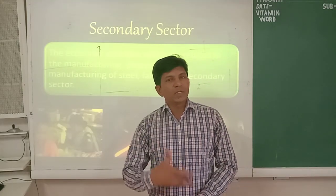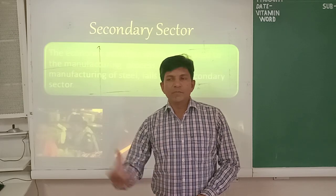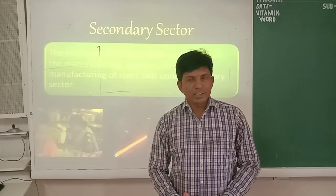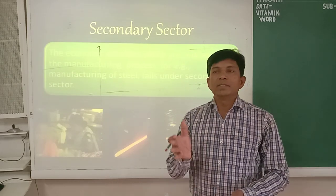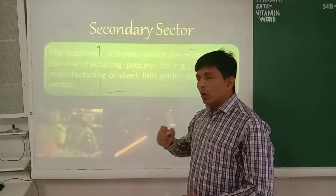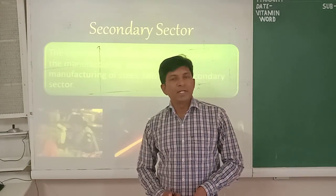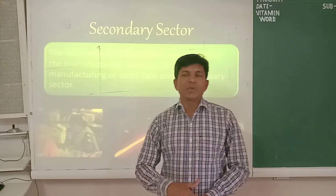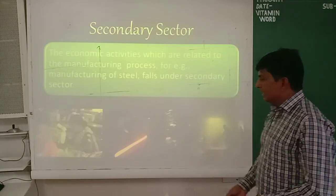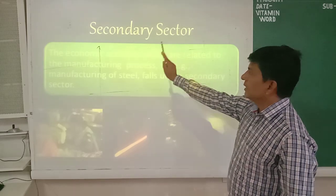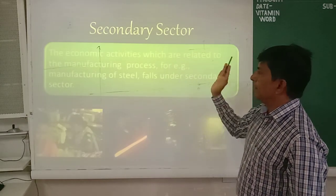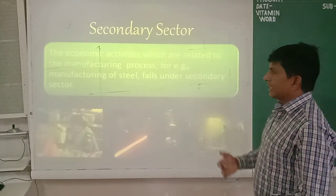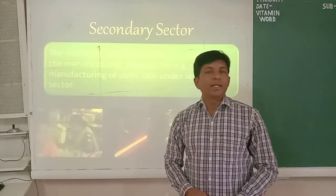In the cotton textile industry, the raw material is cotton which comes from agriculture. In the steel industry, which is part of secondary activity, the raw material — iron ore — comes from primary industry. So the secondary sector is a processing industry whose raw materials come from the primary sector. The economic activities related to the manufacturing process, for example manufacturing of steel, fall under secondary sector.